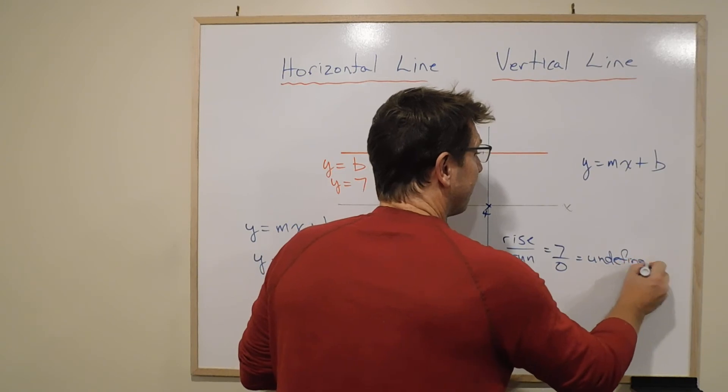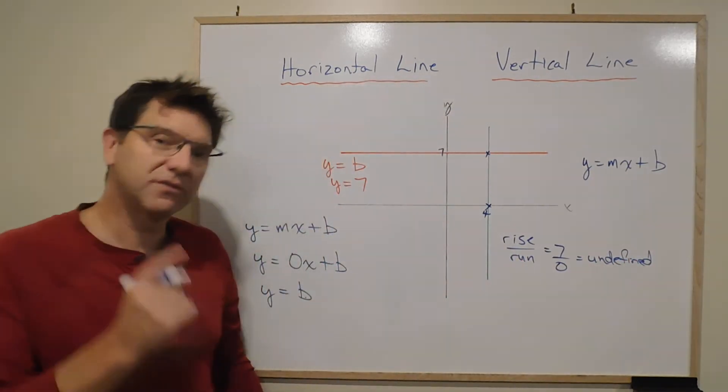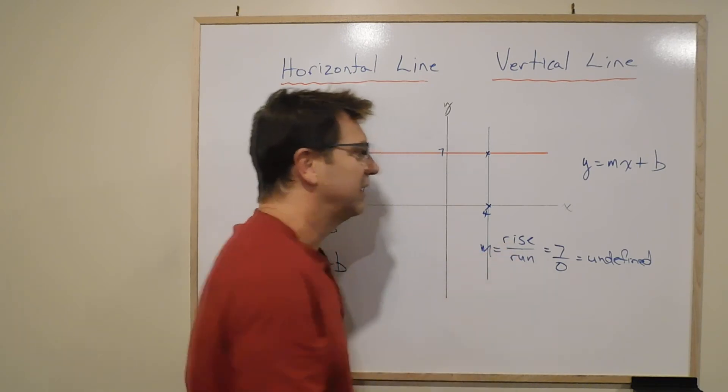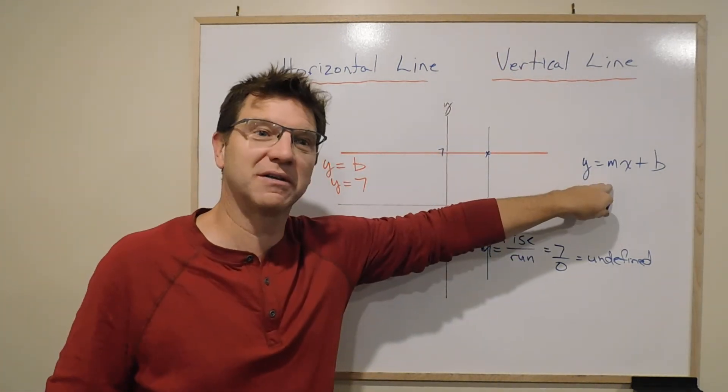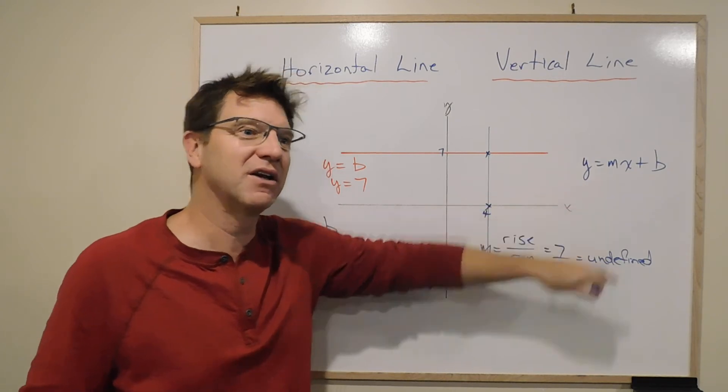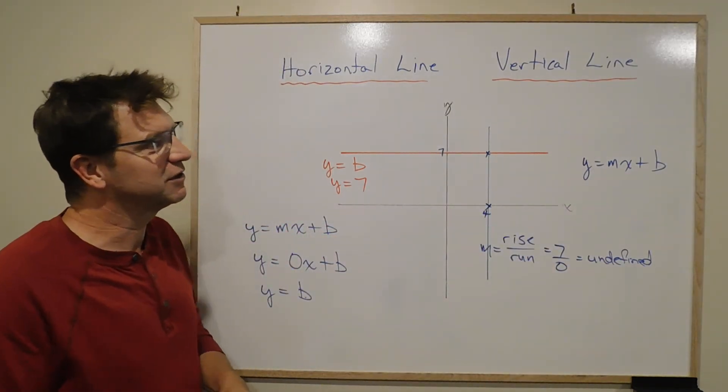So if the slope—remember rise over run is slope—if the slope is undefined, this equation doesn't work. It blows up because it's undefined. So this is what's known as a special case.